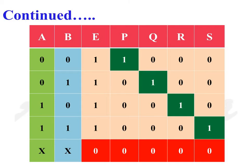When the enable input is equal to 1, based on the logic value at inputs A and B, one of the four outputs will be high. When the enable input is equal to 0, irrespective of the logic values at inputs A and B, all four outputs P, Q, R, and S will be 0.